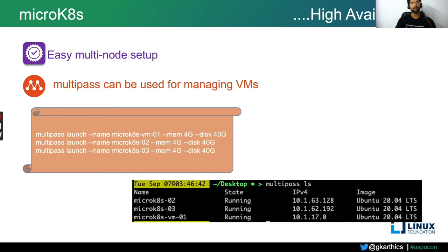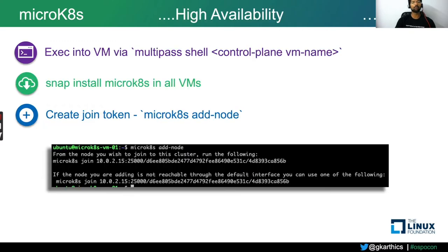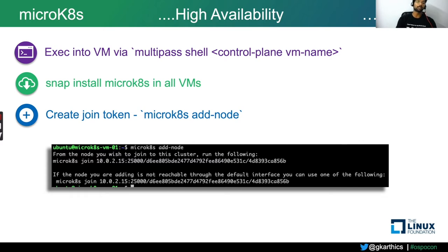Now that the virtual machines are in place, you need to install MicroK8s into them. First, designate one among the three as the control plane. Execute Multipass shell with the control plane VM name to get your terminal into the machine. Then using the snap package manager, install MicroK8s into that VM.